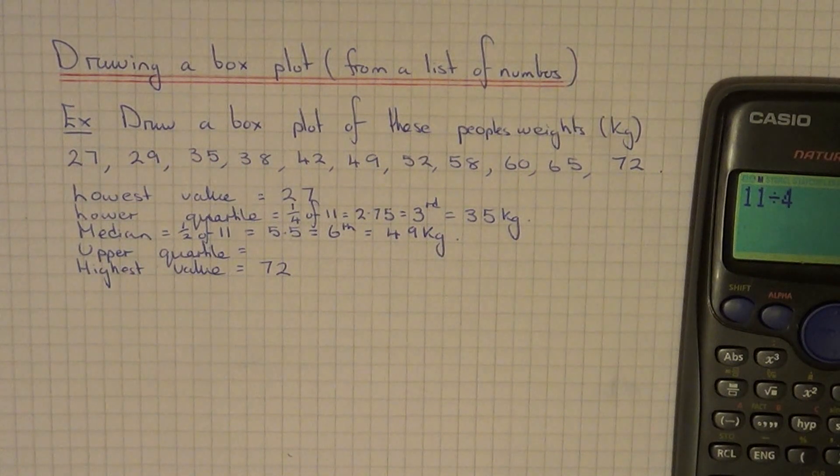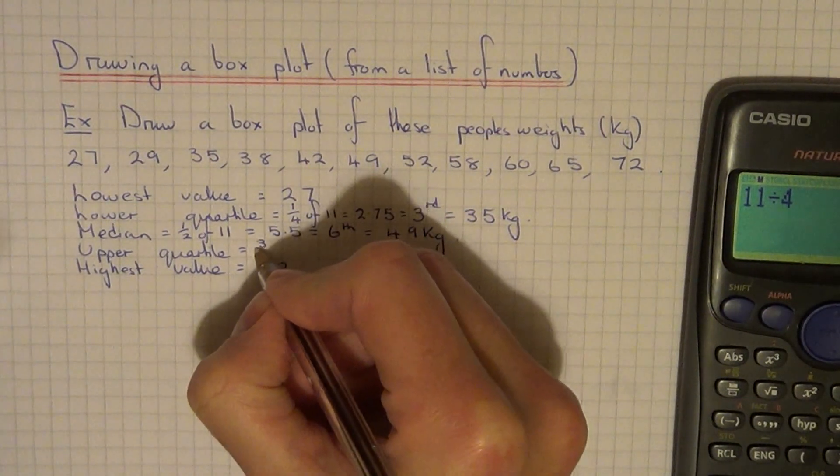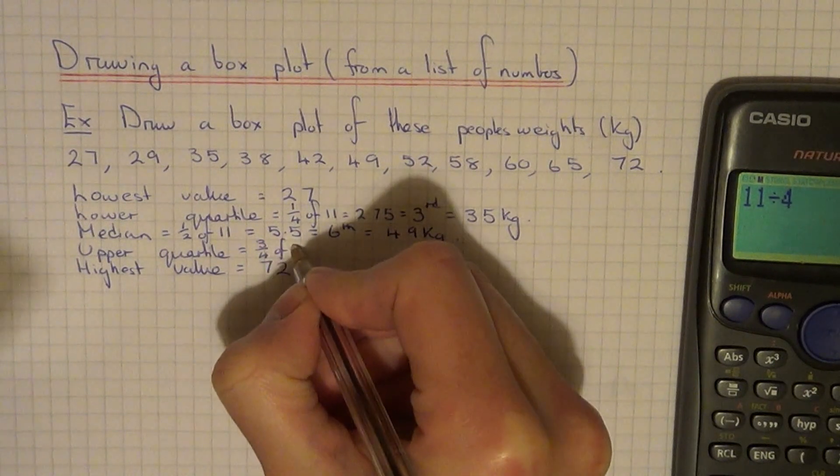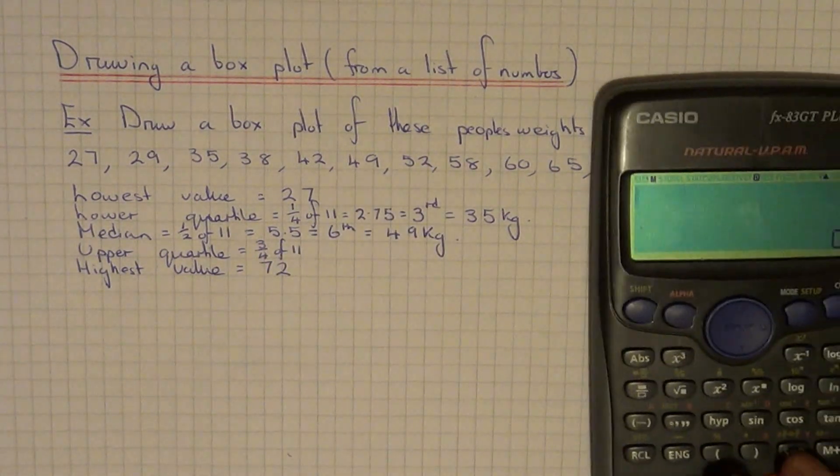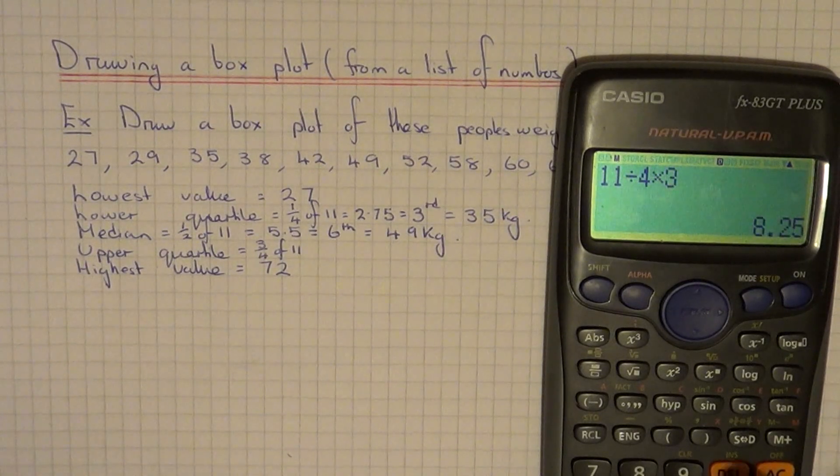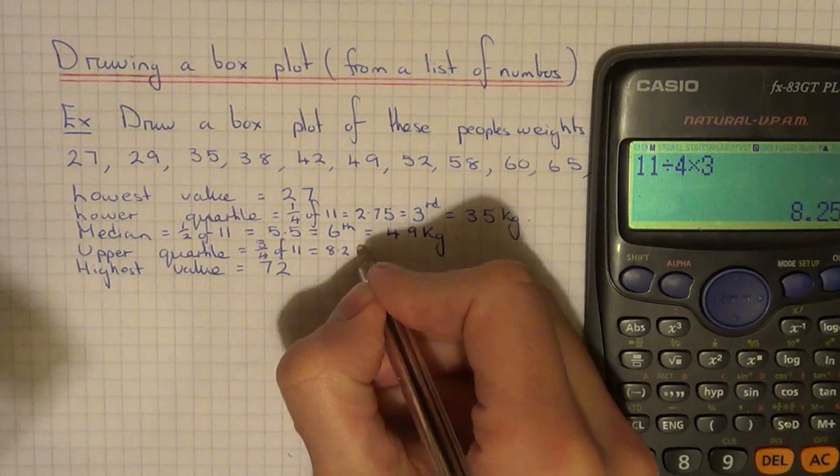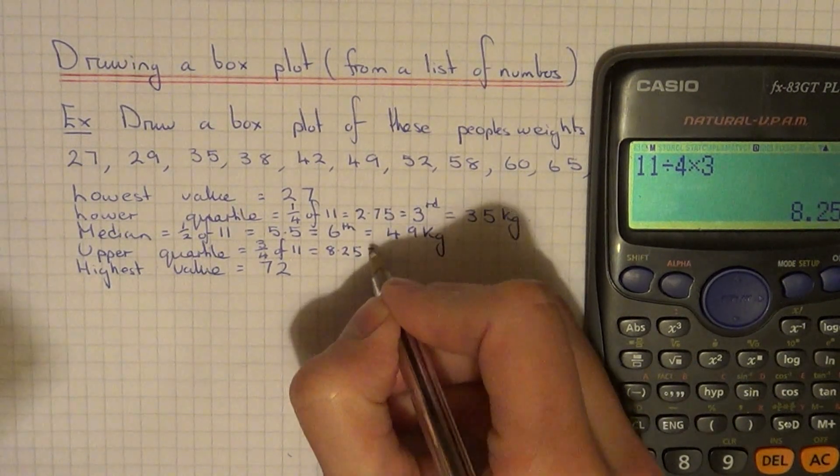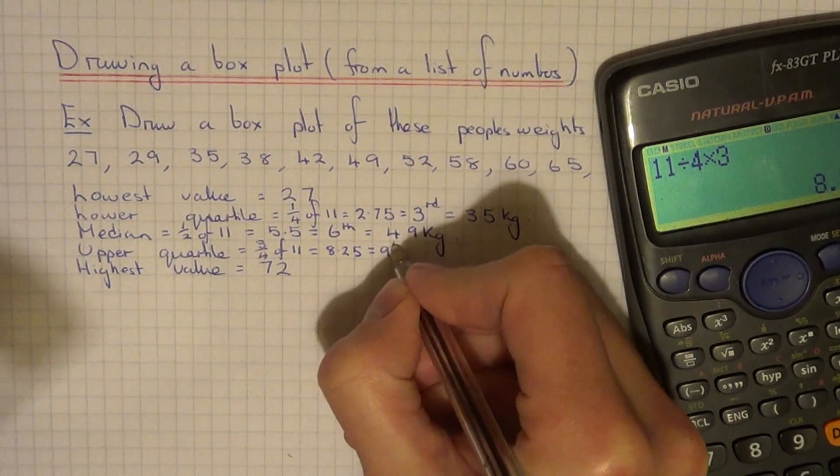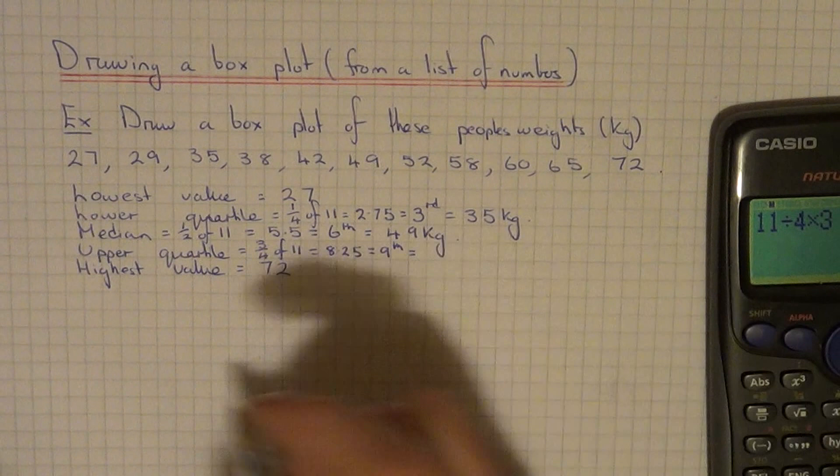We just need to find the upper quartile. The upper quartile is three-quarters of the way through. If we do 11 divided by 4 times 3, that gives us 8.25. Again we've got a decimal, so round it upwards. This gives us 9, so that's where our upper quartile occurs.